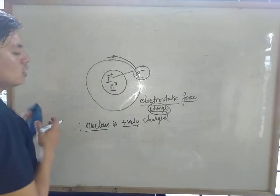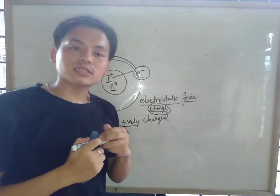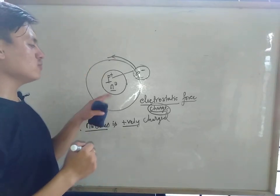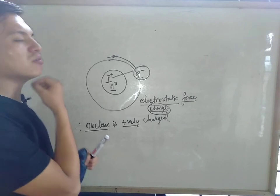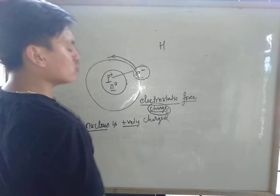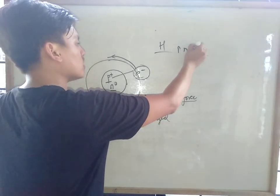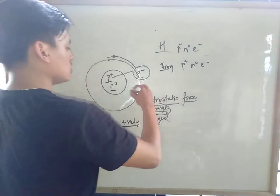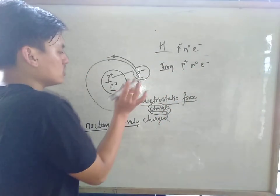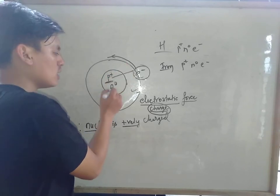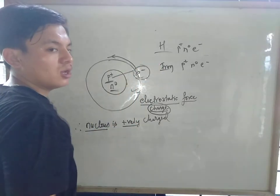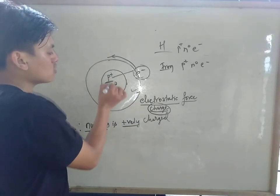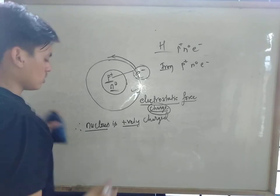This atomic structure is universal. That means whether I take hydrogen or iron, they all have protons, neutrons, and electrons arranged in the same way — with neutron and proton in the nucleus and electrons revolving outside. The numbers of subatomic particles may differ from element to element, but the arrangement is the same. So this structure of the atom is universal.